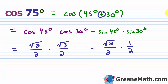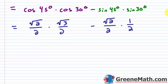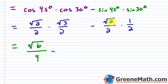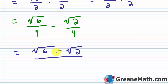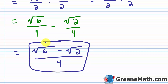Now we do the arithmetic. Square root of 2 times square root of 3 is square root of 6, over 2 times 2 which is 4. Then minus square root of 2 times 1, which is square root of 2, over 4. Since the radicands differ, we can't combine them, so the exact value is the square root of 6 minus the square root of 2, all over 4.